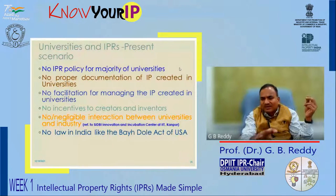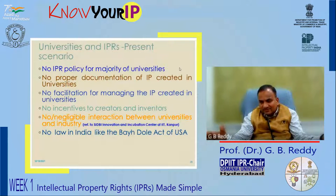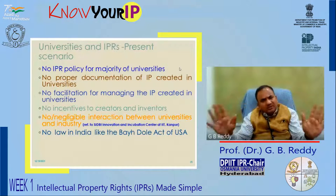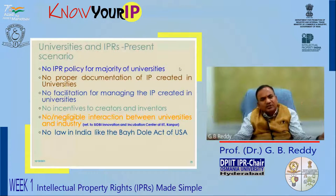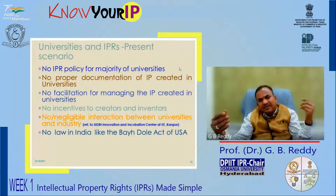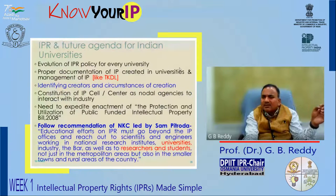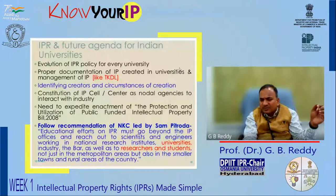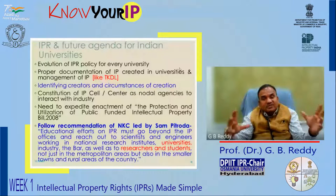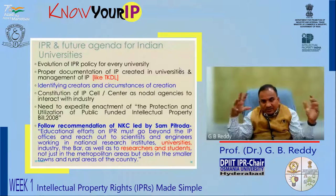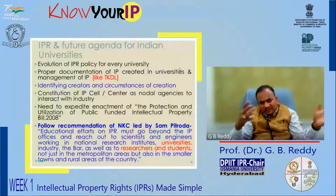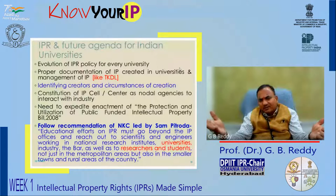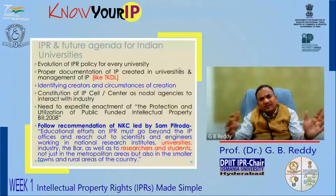Universities today have realized the importance of intellectual property rights because they use and produce different kinds of intellectual property — making inventions, innovations, and publications. Every university and higher education institution is coming out with an IPR policy; Osmania University is going to have its policy very soon. India has taken wonderful initiatives like the Traditional Knowledge Digital Library, where all the medicinal formulations in the public domain have been registered and documented — there are a few lakhs of such formulations well documented there.